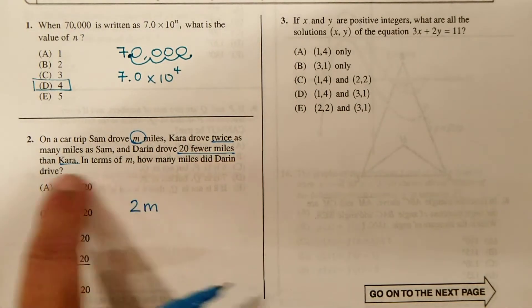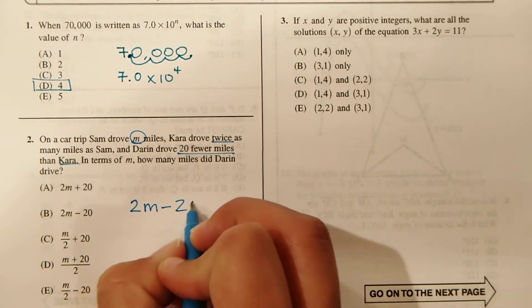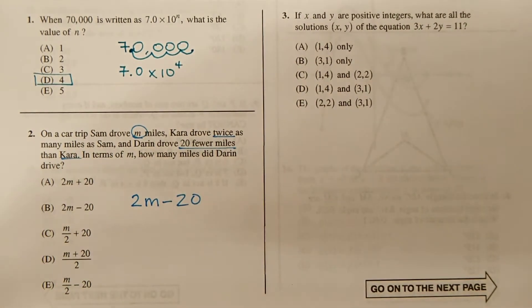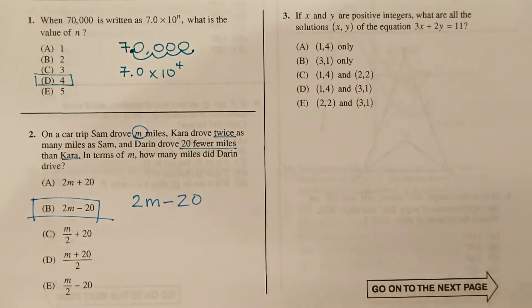Darren drove 20 fewer than Kara. So Kara was twice M, fewer 20. In terms of M, how many miles did Darren drive? So this is going to be Darren's total. This was Sam, Kara was twice Sam, and Darren is 20 less than Kara. So this is going to be our answer. So B will be the answer here.